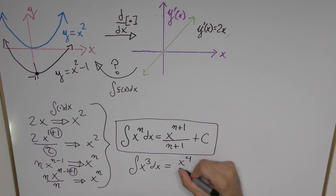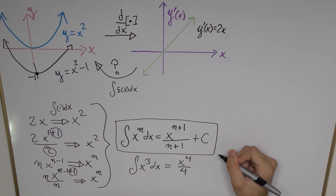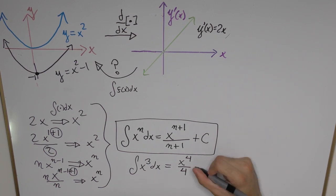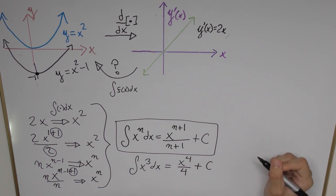So using the formula above we're just going to increase the power by one unit so that becomes x to the power of 4, and then we're going to divide that by the new power which is 4, and then we're going to add the arbitrary constant C.